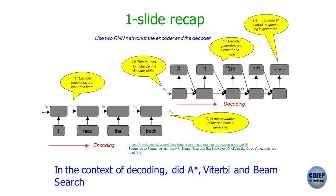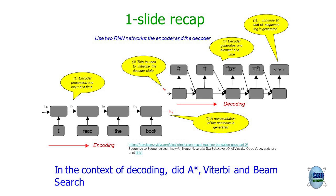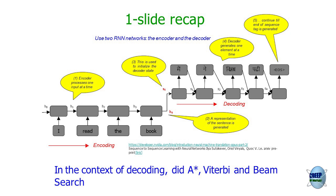A quick recap: the main attention was on encoder and decoder in a machine translation setting. The input sentence 'I read the book' gets translated as 'maine kitab pari.' The encoder processes the input sentence one word at a time, producing a vectorial representation of the whole sentence going into an RNN — which could be LSTM, GRU, or similar — that then outputs the target language sentence words.